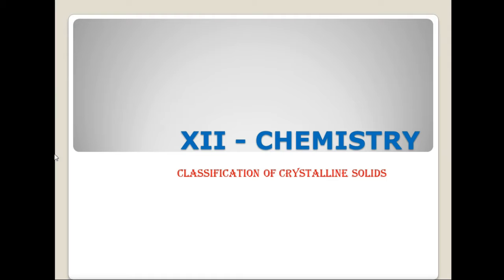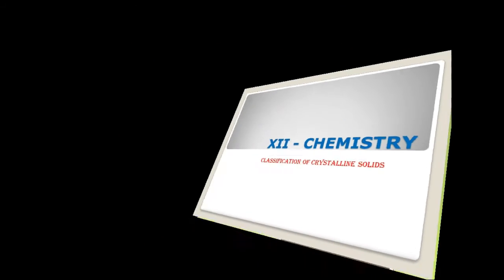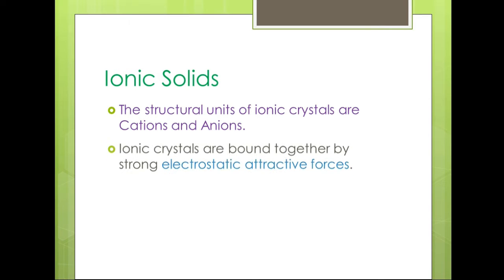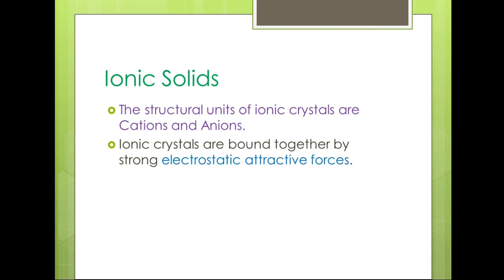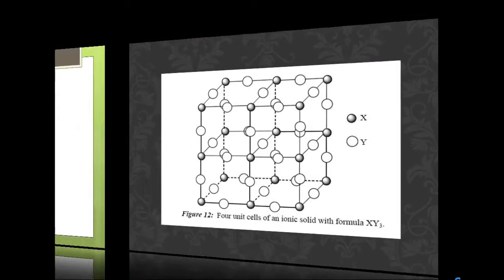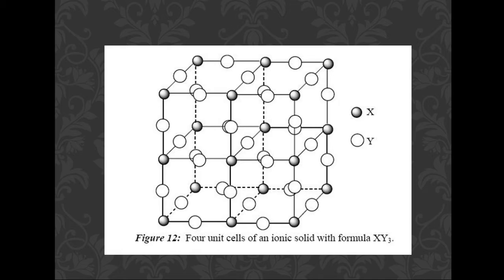Hello students. Now we are going to discuss about classification of crystalline solids. We are going to discuss about ionic solids. For example, sodium chloride — Na⁺ and Cl⁻. Ionic crystals are bound together by strong electrostatic attractive forces and have a definite crystal structure.